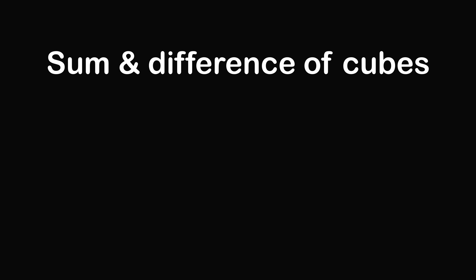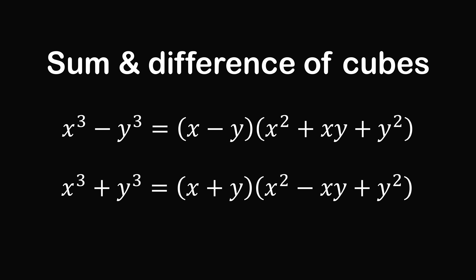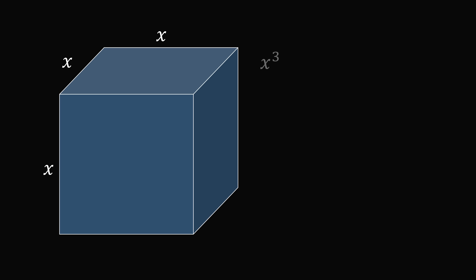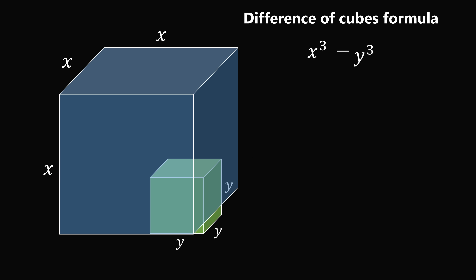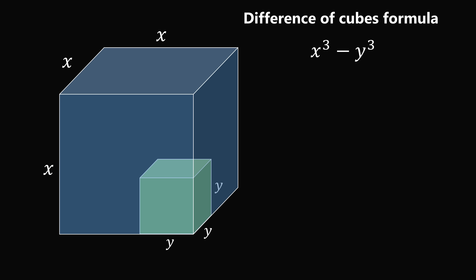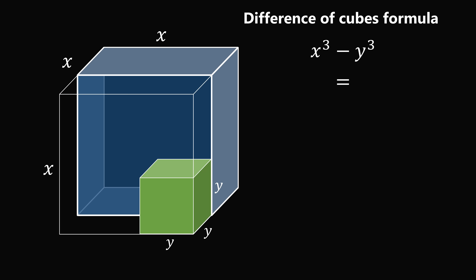Let's also review the formulas for the sum and difference of cubes. Here's the difference formula, and here's the sum formula. There's a fun way to see this geometrically. We take one cube with side length x, so its volume is x cubed, and another cube with side length y, so its volume is y cubed. The difference of volumes is x cubed minus y cubed. We derive this as the sum of volumes of three rectangular prisms. One prism has dimensions x, x, and x minus y.